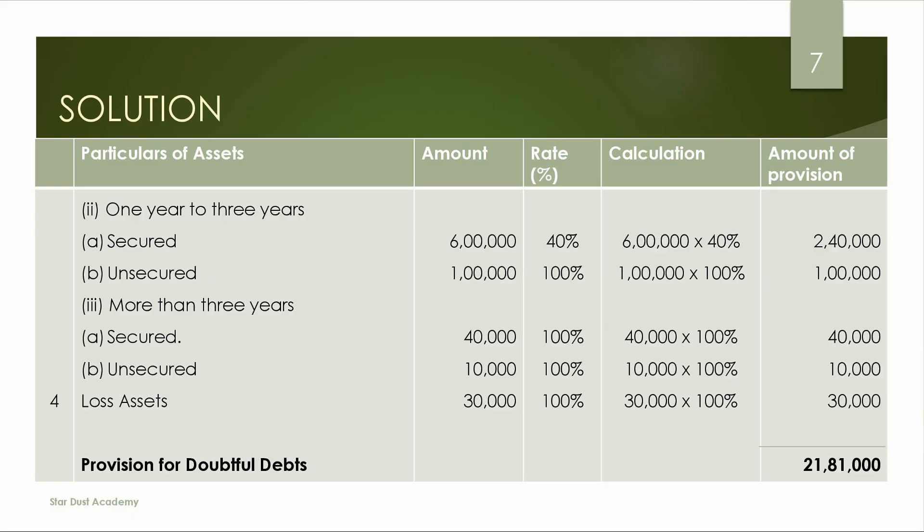Loss Assets is 100%. After calculating all amounts and adding them together, the total provision for doubtful debts comes to 21,081,000 (approximately). This is the total provision we have calculated.